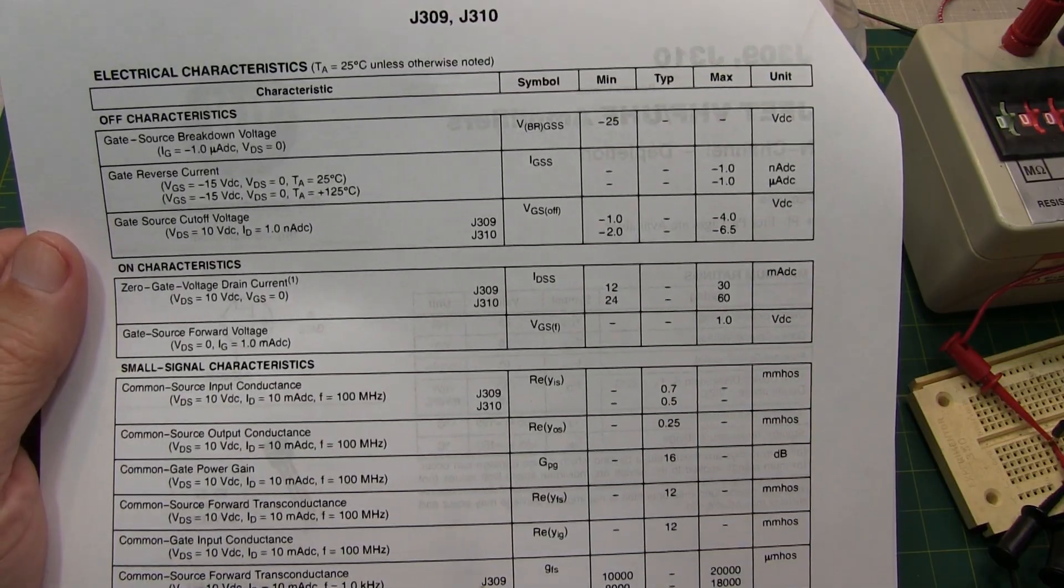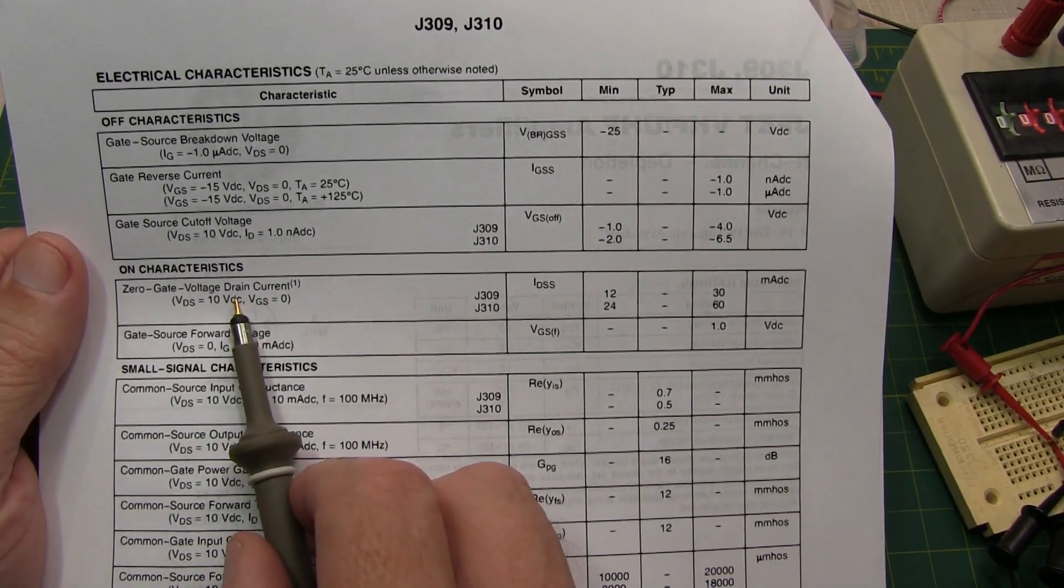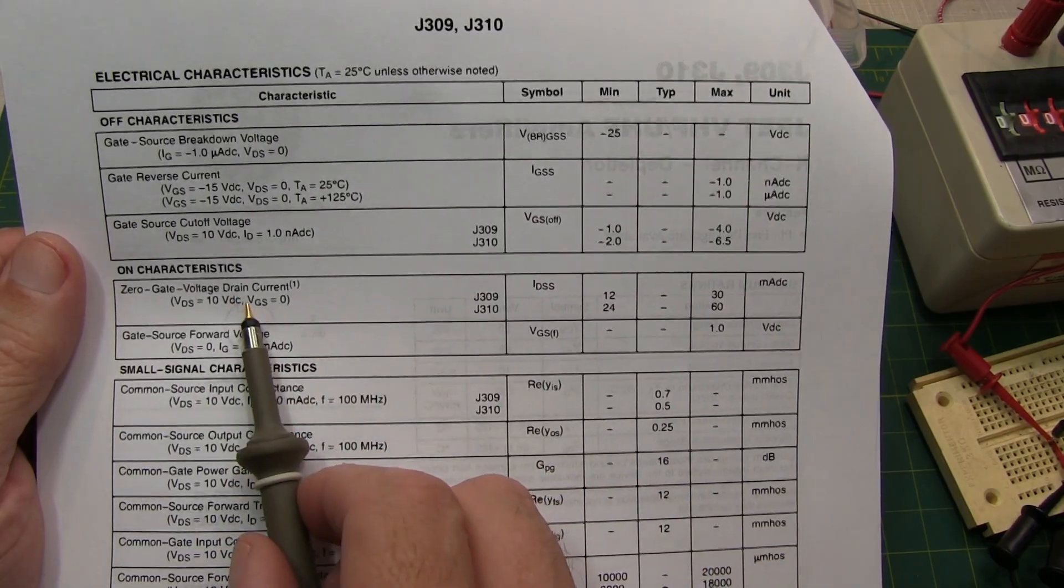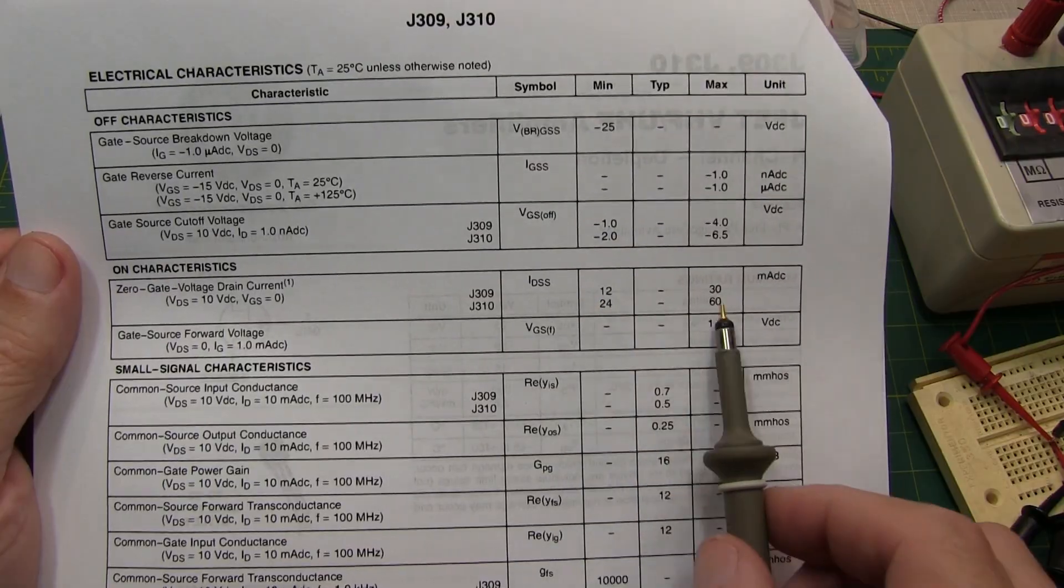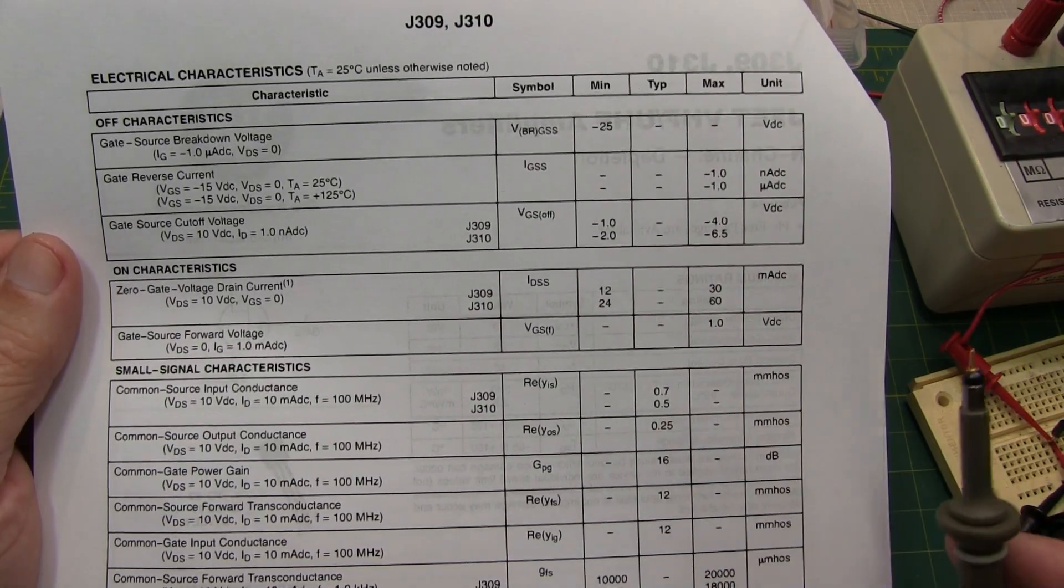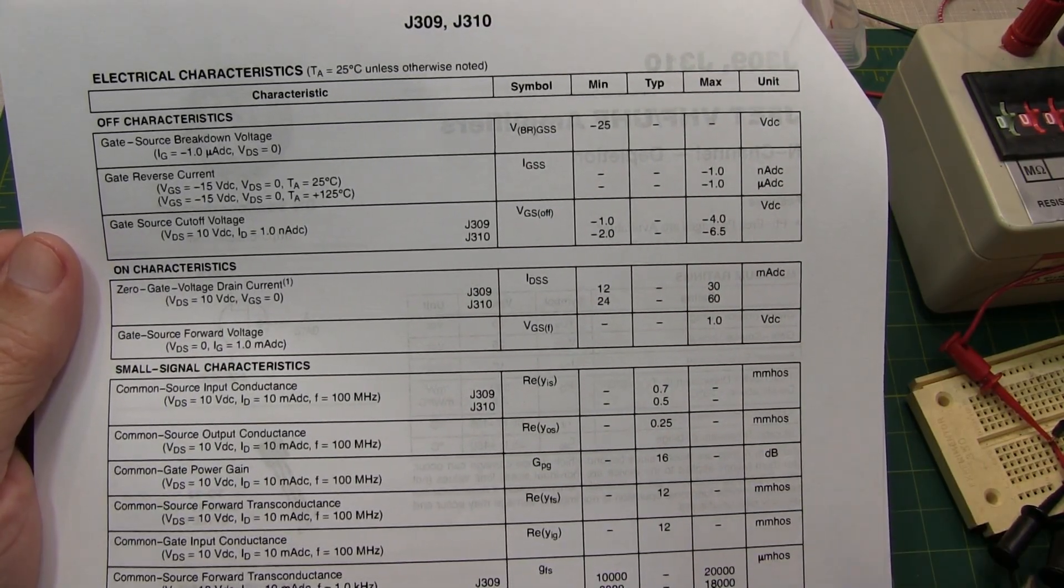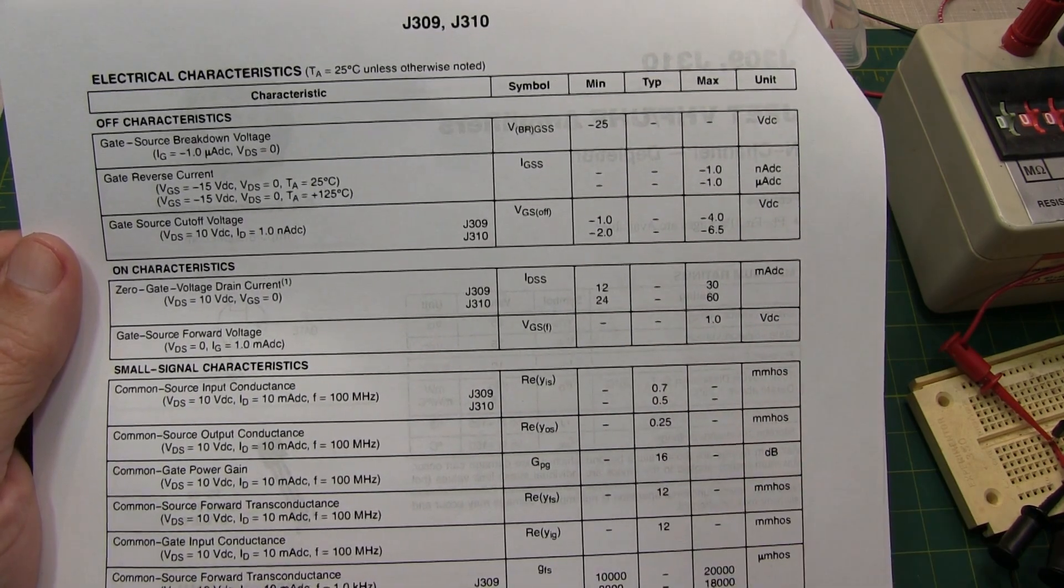The next thing we'll take a look at is IDSS, and that's the zero gate voltage drain current, which is when that drain current is going to be the highest. Again, for the J310, 24 to 60 milliamps, and we measured just a little over 40 milliamps on that device in the curve tracer, so again right in the middle of that spec.